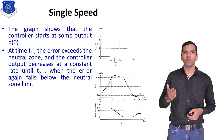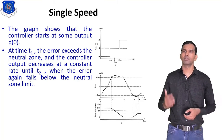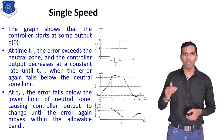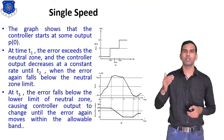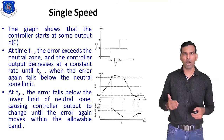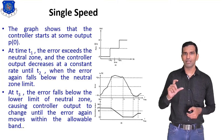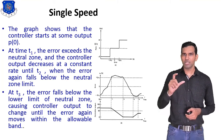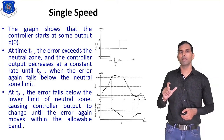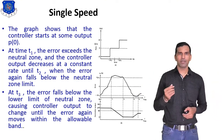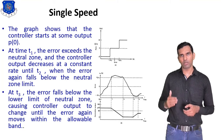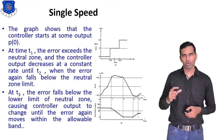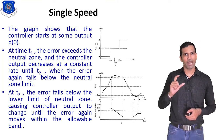At t3, the error falls below the lower limit of the neutral zone, causing the controller output to change. This is the behavior of the single speed control mode — you can see the changes in controller output according to how the error changes. The example uses reverse acting mode.